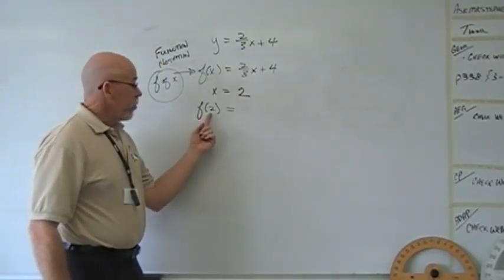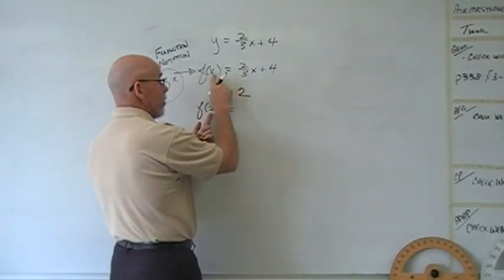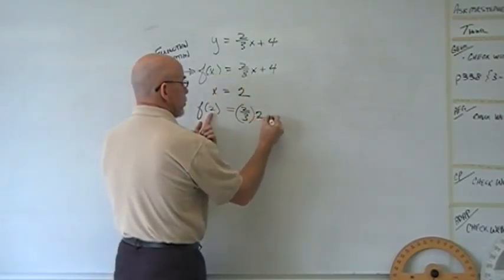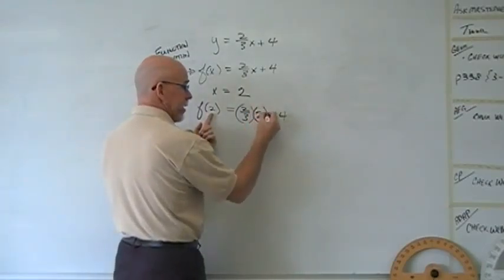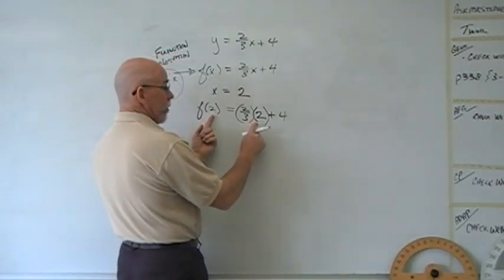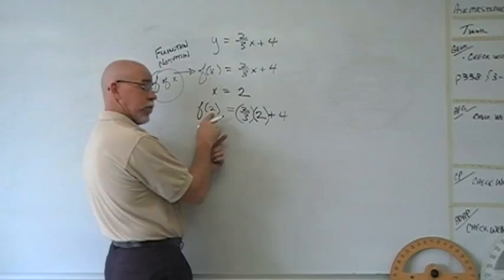The f function, when x is two, this tells you to, instead of writing x, see how x is written in these two places? Instead of writing x there, we write two. When you write the x in, please try to put it in parentheses. It'll help you not make mistakes. So here we've got, instead of two-thirds times x, we've written two-thirds times two. Why two? Because that's what we've written there.